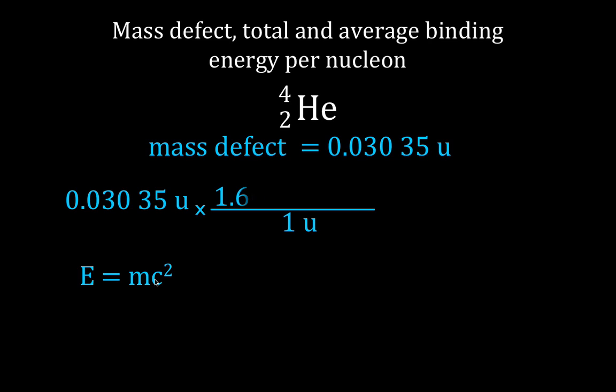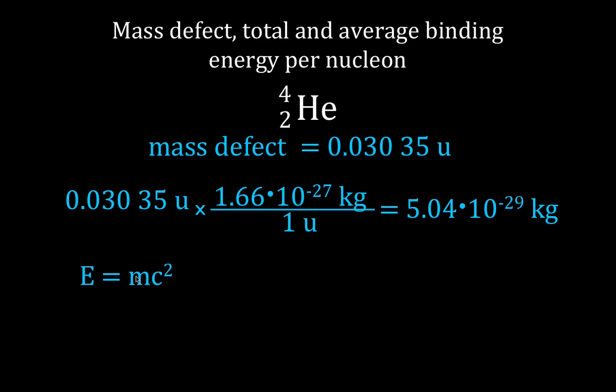We know that one atomic mass unit is equal to 1.66 times 10 to the minus 27 kilograms. That gives us the mass defect in kilograms as 5.04 times 10 to the minus 29 kilograms. Now, we're going to use Einstein's equation because now we have kilograms.